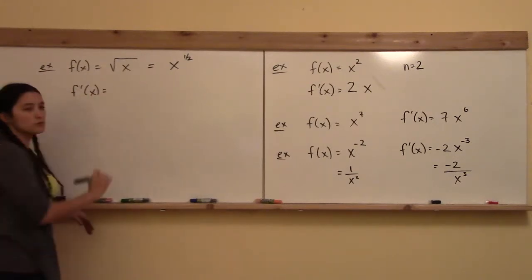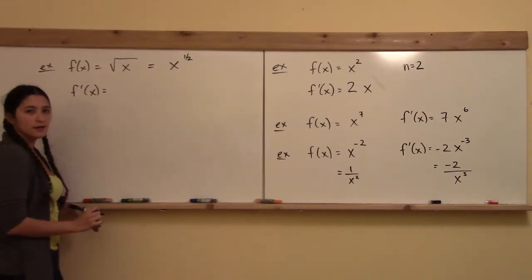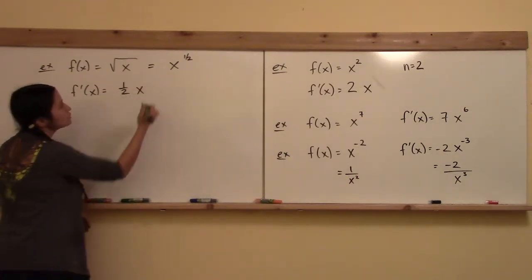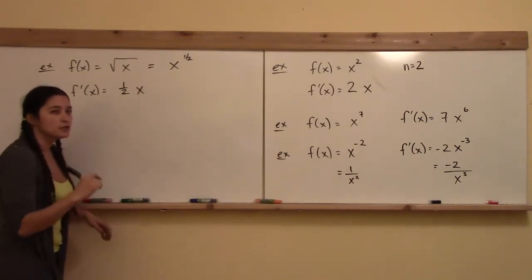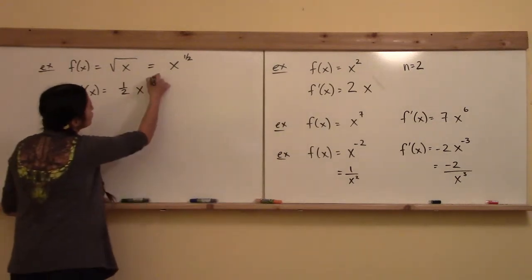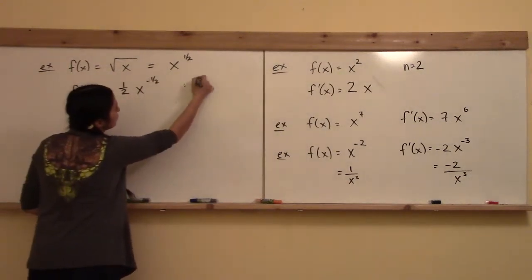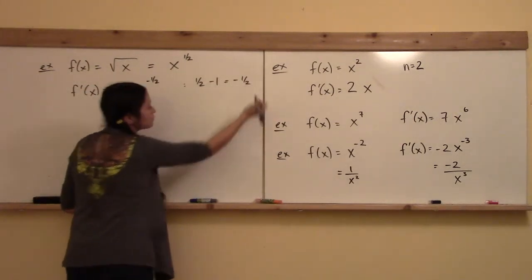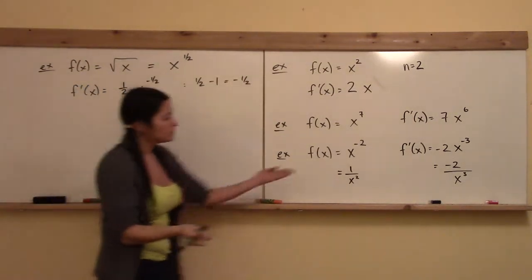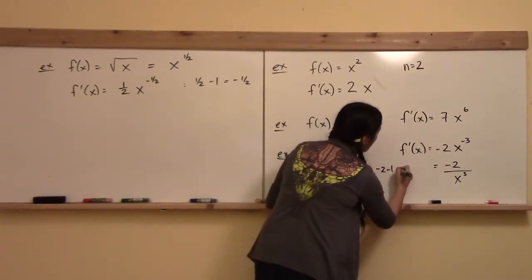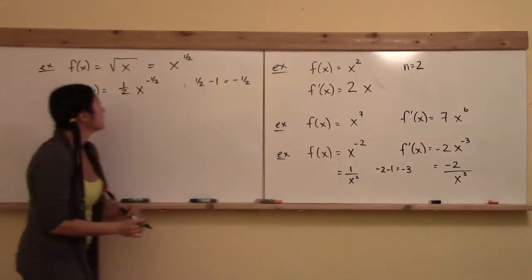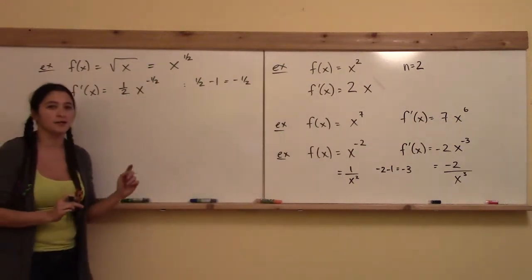So go ahead and practice the rule. What are you going to get here? 1 half comes down, x to the 1 half minus 1. You always minus 1, so you get a minus 1 half. Okay, so I'll just write that on the side. Minus 1 half minus 1 is minus 1 half. So that's where that came from. Just like over here, minus 2 minus 1 is minus 3. So that's why we got the minus 3 there.